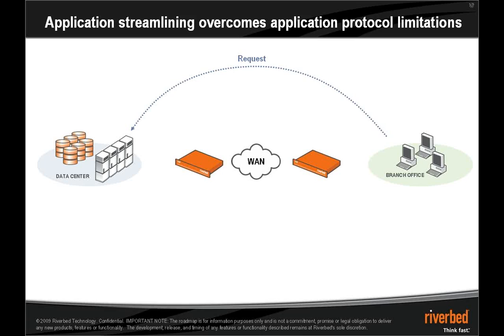Our solution is to take all of that chatty behavior off the wide area network — off the link where the latency is causing pain. We do this by understanding the way the protocols work. In this scenario a client may make a request for a Word file from the server in the data center. It will go direct to the server, but the Steelhead will see that request on its way through. The Steelhead will essentially predict the conversation that would occur between client and server, and act on the client's behalf, completing the transaction locally on the local area network.